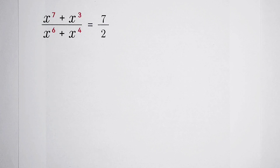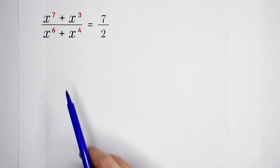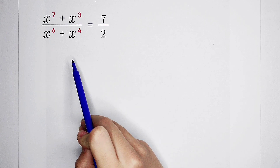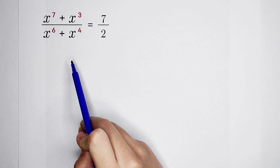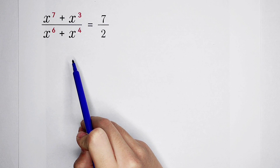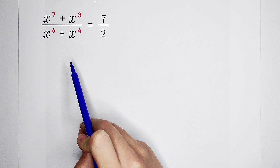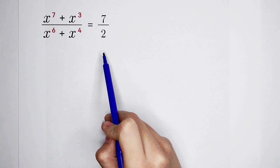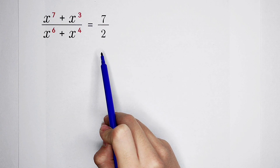Are you able to solve this equation? The left hand side has a term about x, and the right hand side is 7 over 2.